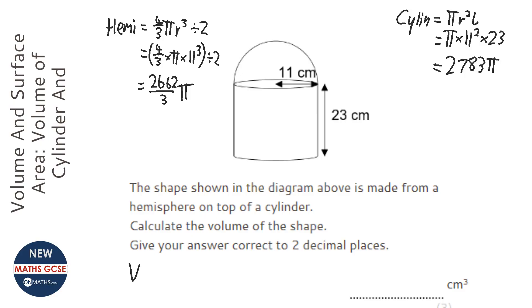And the total volume is going to be them added together. So if I write the numbers down right, so 2662 over 3 pi. And putting them in terms of pi just helps us keep the accuracy, so we only round the answer. So I'm going to add them together. So 2662 pi over 3 and add them together.